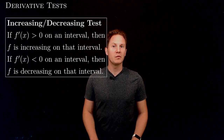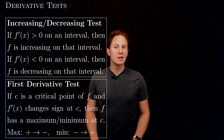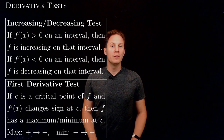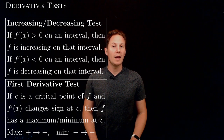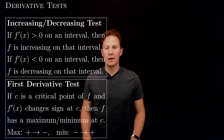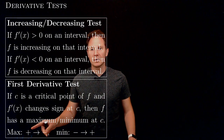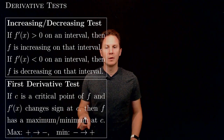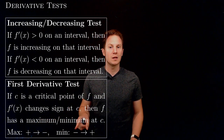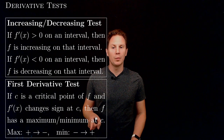Then we have the first derivative test, which tells us that if we have a critical point c at which the first derivative of our function changes sign, then the function must have a maximum or a minimum at c. A maximum if the first derivative goes from positive values to negative values, and a minimum if the first derivative goes from being negative to positive.